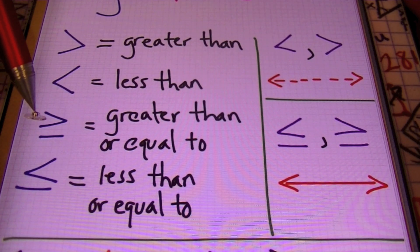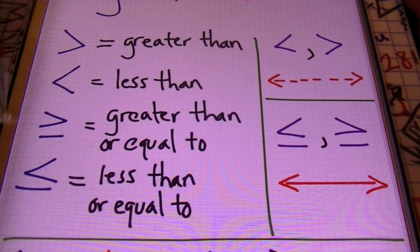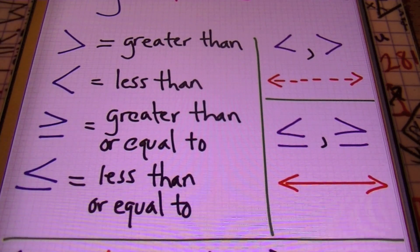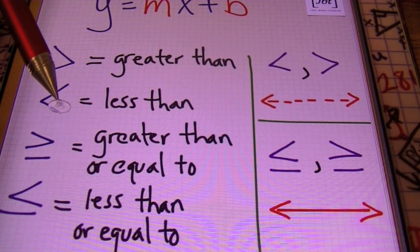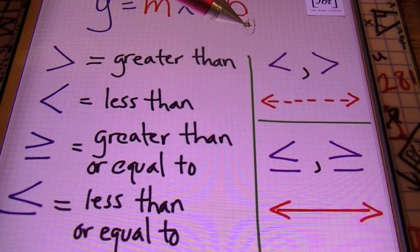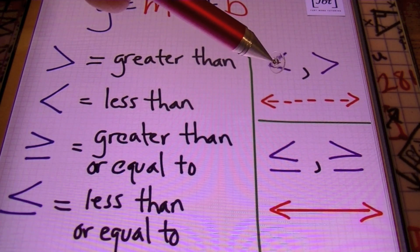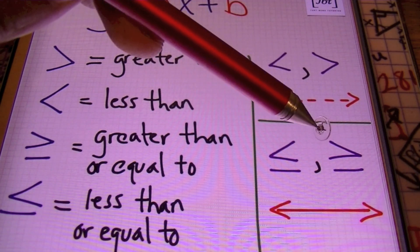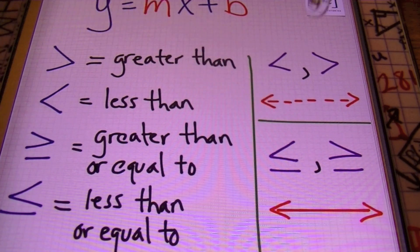We also have the greater than or equal to symbol — not only can our solutions be greater than the value, they can also be equal to the value. And this is the less than or equal to symbol as well. If you have a less than or a greater than symbol, you'll be using a dashed line because the solutions are not on the line. If it's less than or equal to or greater than or equal to, you will use a solid line because the solutions are also on the line.